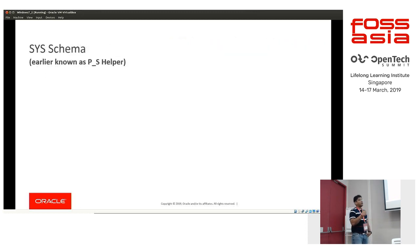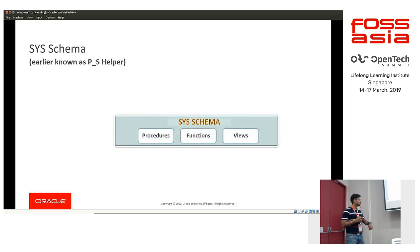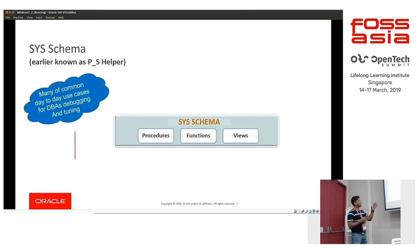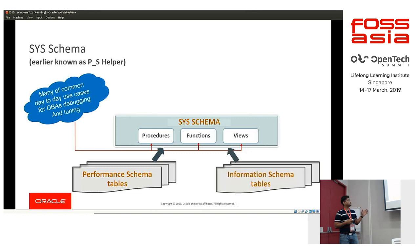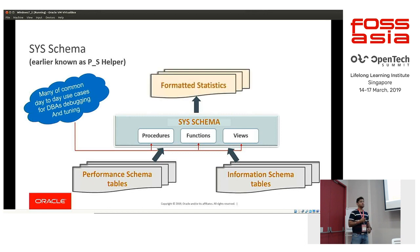Apart from Performance Schema, we have something called SysSchema. SysSchema is a collection of procedures, functions, and views that address day-to-day things DBAs face. These pull information from Performance Schema tables and information_schema tables and present the statistical information in a well-formatted way for users. It has been very well received by the community.